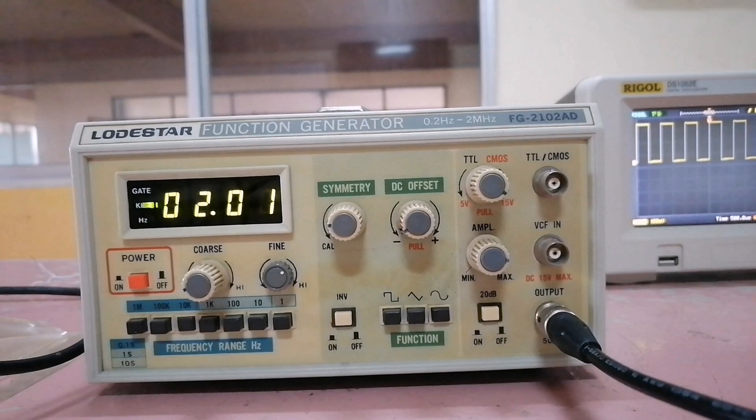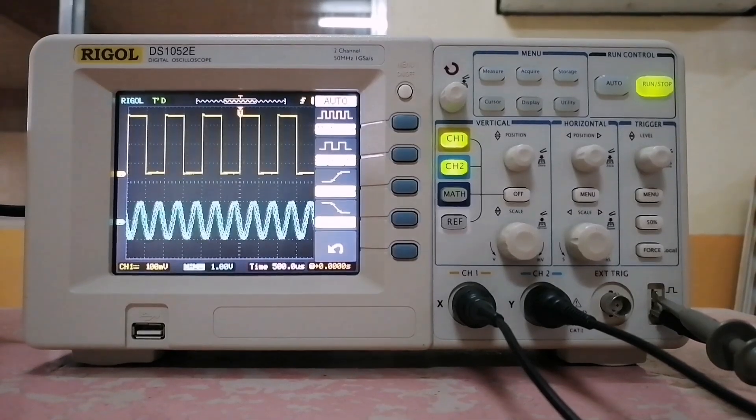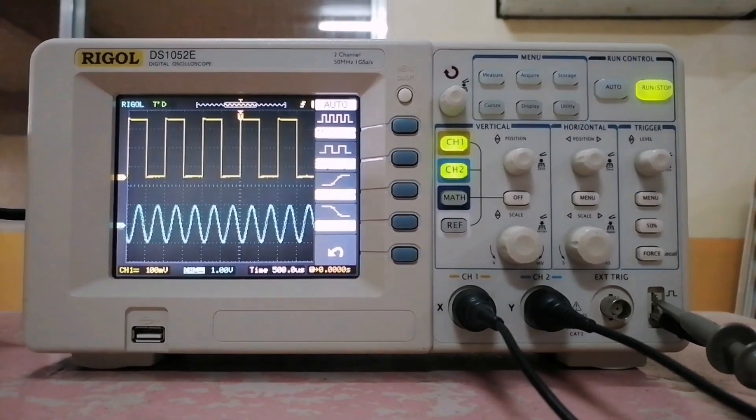Here, I'm using a function generator for the second channel, with a frequency of approximately 2 kHz. Once it's connected, press the auto button. Both of the waveforms will be shown together on the screen.